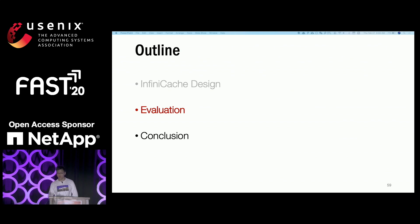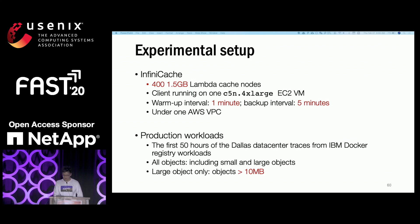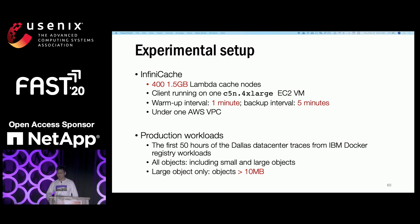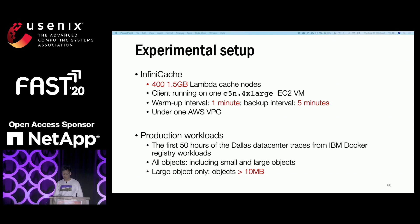Now let's see how Infinity Cache performs under real-world production workloads. We deployed Infinity Cache on top of AWS Lambda with 400 Lambda functions. Our client runs on one C5N4X large EC2 instance. Warmup and backup are performed every one minute and five minutes respectively, and all components run under one AWS VPC network. We replay the first 50 hours of Dallas data center traces from IBM Docker registry production workloads. We have two workload setups: all objects (all objects in the 50-hour experiment) and large objects only (objects smaller than 10 megabytes removed).